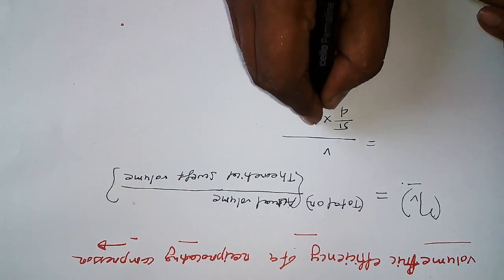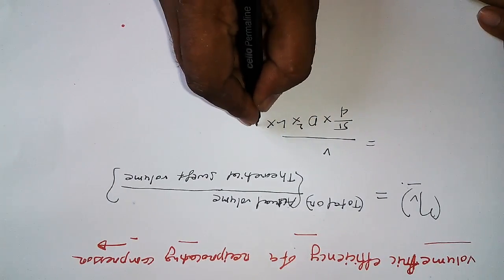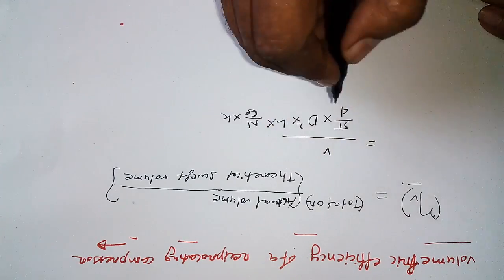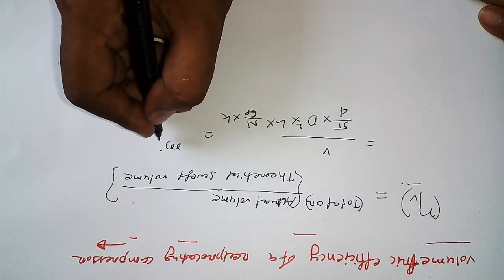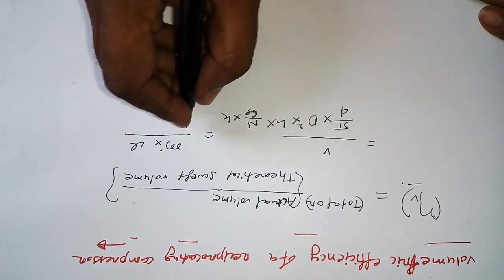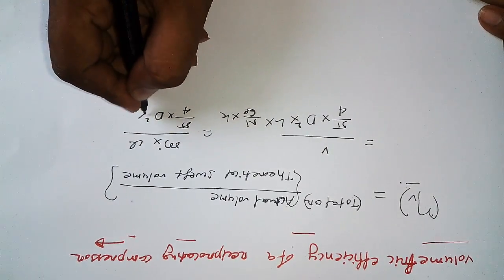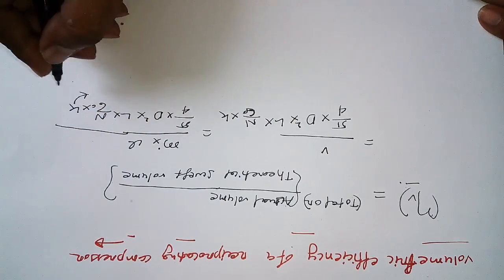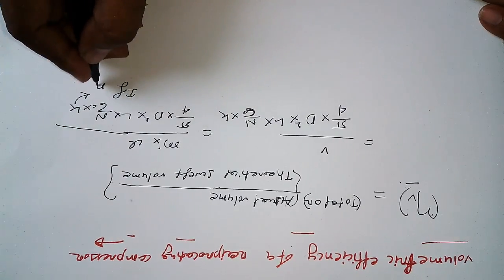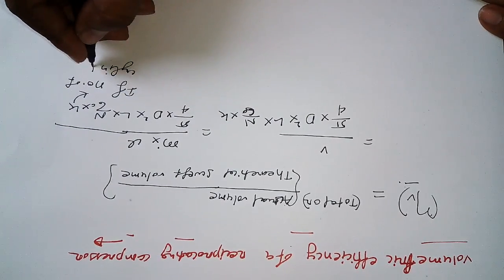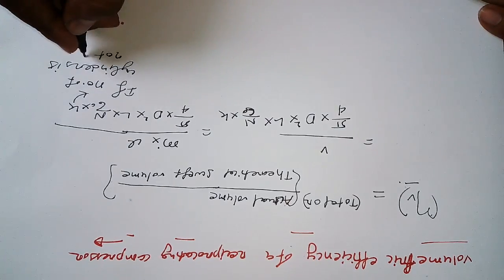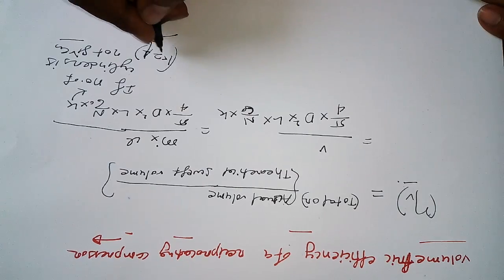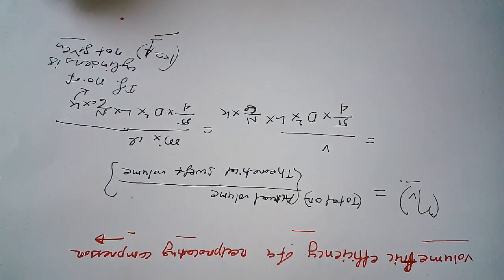The theoretical swept volume is given by (π/4) × D² × L × n / 60 × K, where K is the number of cylinders. We can also write it as mass flow rate × specific volume divided by (π/4) × D² × L × n / 60 × K. If the number of cylinders is not given, take K equal to 1.